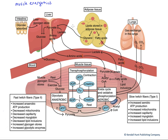First, we want to point out that we have energy stores outside of the muscle tissue, including the liver, which has a lot of glycogen stored as well as some fat. We've got adipose tissue with lots of fat stored and a little bit of glycogen. We can release nutrients from those sites to maintain blood levels, which is important mostly during very prolonged exercise. For most types of activity, we rely on local stores of energy within the muscle.